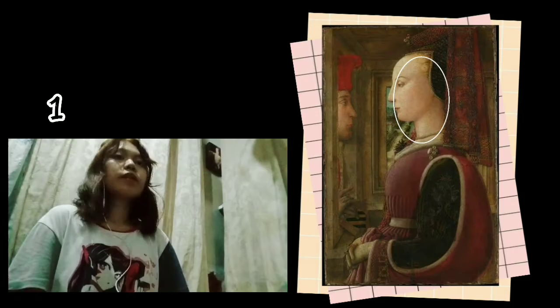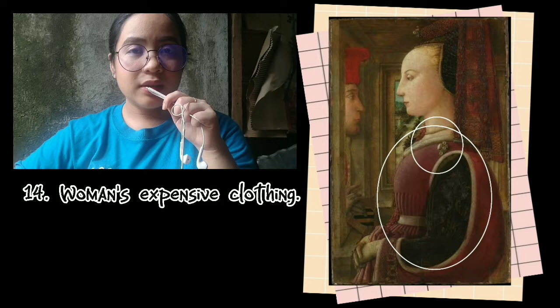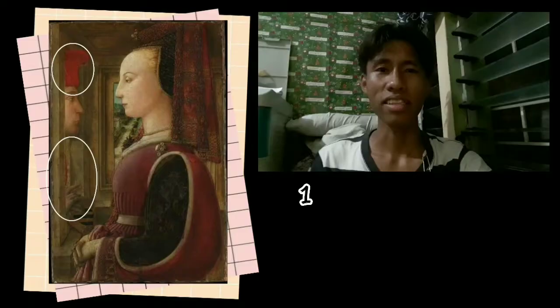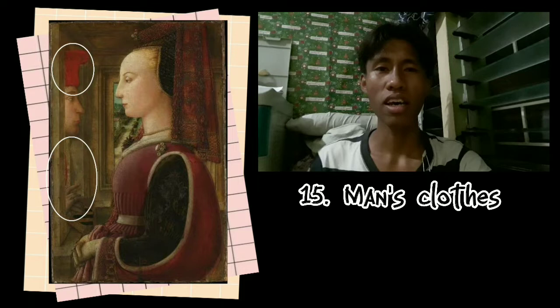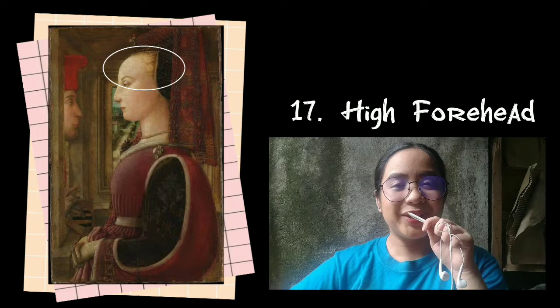The pale skin represents purity. The woman's expensive clothing is a representation of wealth. The man's clothes are no less expensive, dressed in scarlet and wearing a hat designating his high social rank. With regard to the woman's beauty or looks, it symbolizes virtue. The high forehead is the representation of beauty.